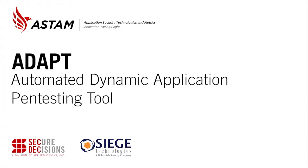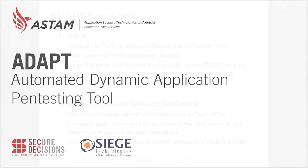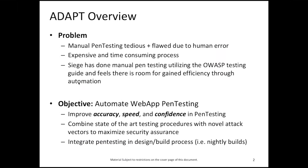Hi, my name is Martin Ostolo. I am the PI for the Siege ADAPT effort, the Automated Dynamic Application Pen Testing effort. The problem we are solving is that manual pen testing is very tedious and very flawed due to human error components. It's very expensive and time consuming. We at Siege have performed many manual pen tests utilizing the OWASP testing guide, and there is definitely room to gain efficiency through automation.